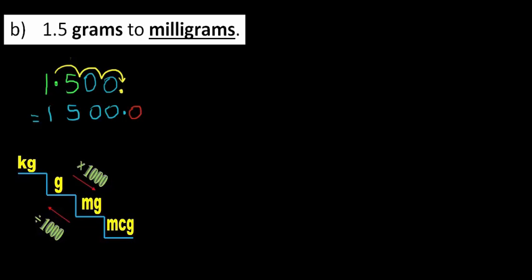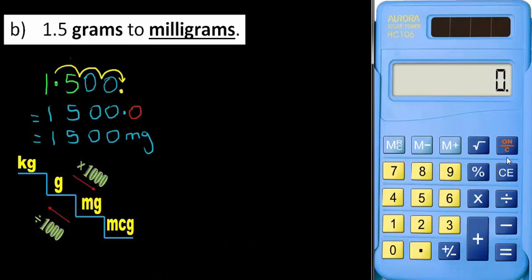So again let's check with the calculator. I've got 1.5 grams to milligrams, going downstairs, it's times a thousand, equals 1,500 and my calculator shows a weird comma between the one and the five to indicate that it is thousands which is not entirely clear. Okay that's that one done.